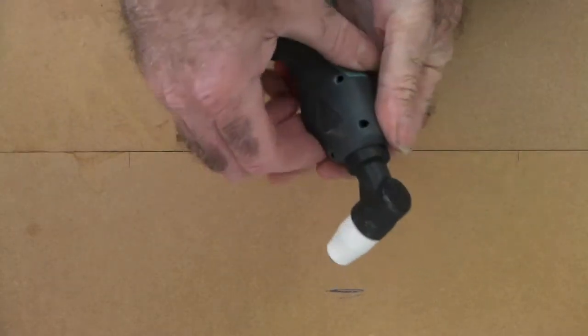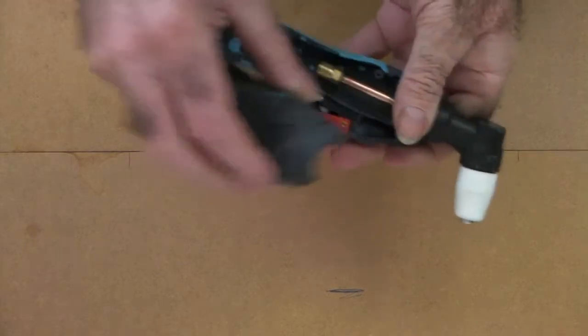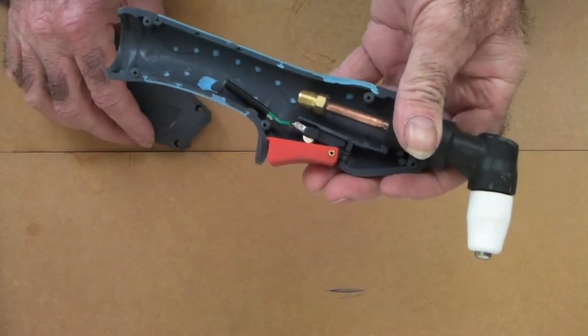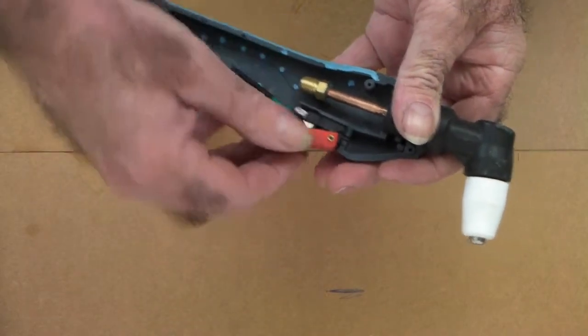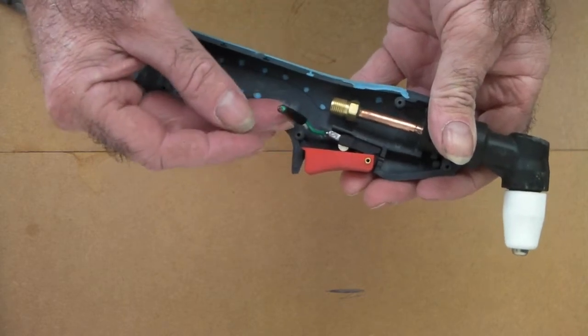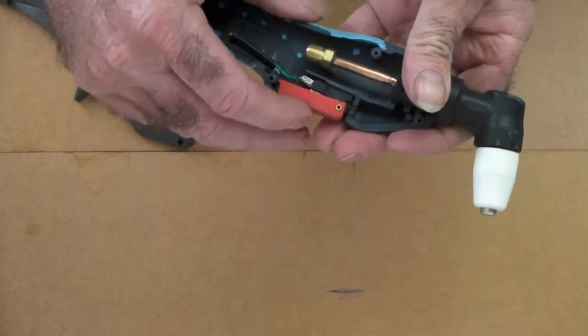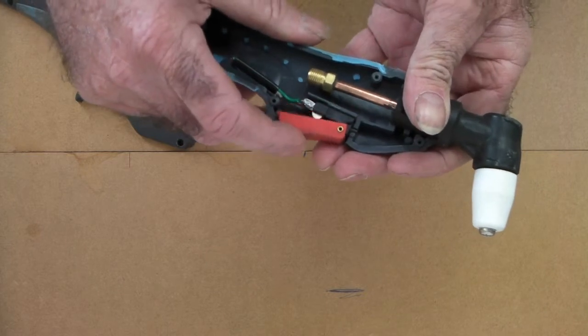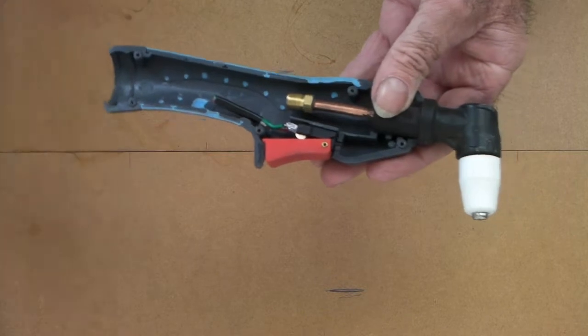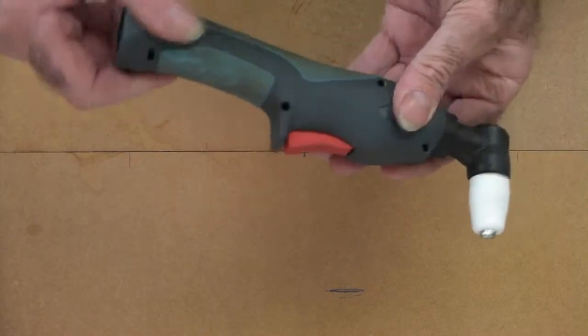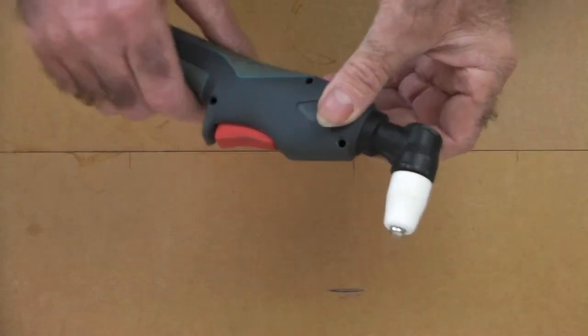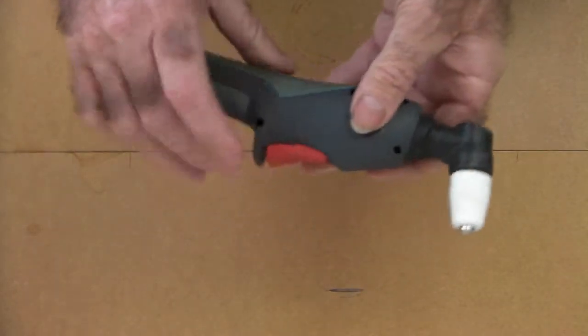What most people do is they'll just replace the whole torch, spend a hundred bucks for a new torch and a new lead. But there's your switch in there with just two wires coming off it. These things just break or you stand on them or you run over them with your truck. But I come up with a quick hack that you don't have to do that.